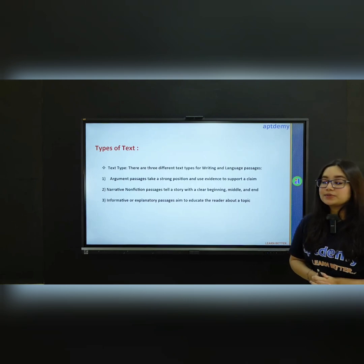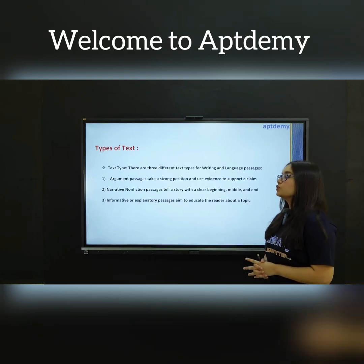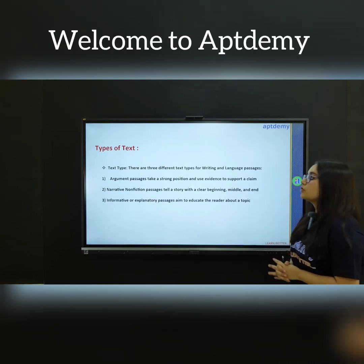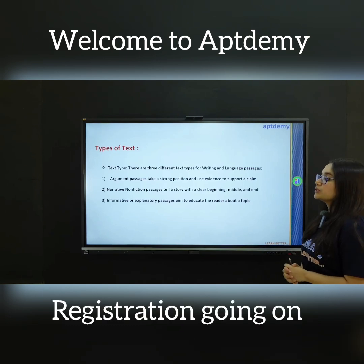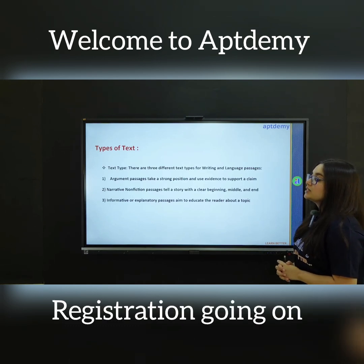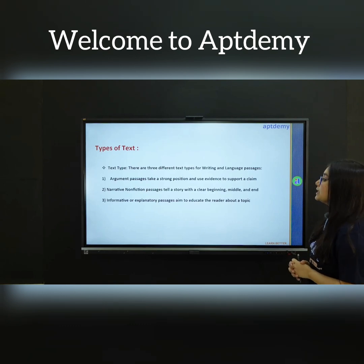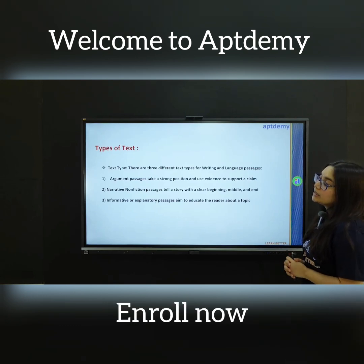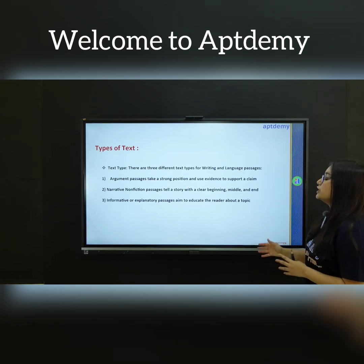You will have three types of text: the first one being argument passages, which will take a strong position and use evidence to support a claim; the second one being narrative non-fiction passages, which will tell you a story with a clear beginning, middle, and end; and the last one being informative or explanatory passages, which will aim to educate the reader about a topic.